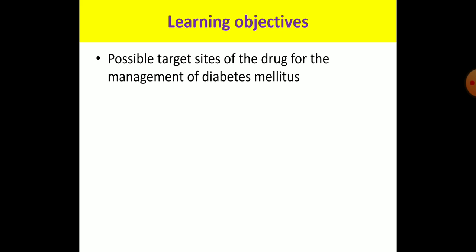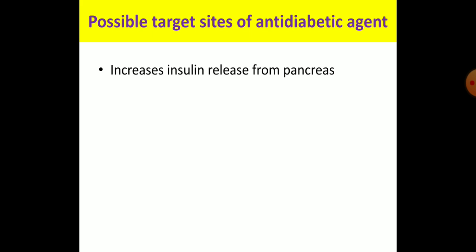Today we will discuss the possible target sites — the possible anti-diabetic actions of anti-diabetic drugs — and their classification. The first possible way a drug can act as an anti-diabetic agent is by stimulating the beta cells of the pancreas to increase insulin release. These agents are known as insulin secretagogues.